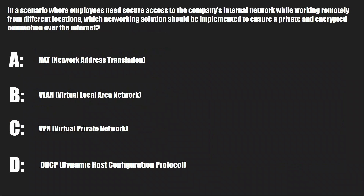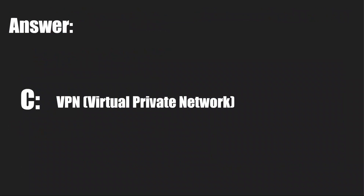Final question: In a scenario where employees need secure access to the company's internal network while working remotely from different locations, which networking solution should be implemented to ensure a private and encrypted connection over the internet? A: NAT. B: VLAN. C: VPN. Or D: DHCP. The answer is C — VPN, or virtual private network.